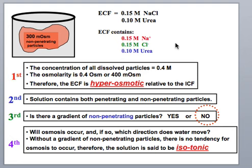In this case, we have a mixed type of solution. The extracellular fluid has 0.15 moles of sodium chloride and 0.1 moles of urea. We know that sodium chloride can dissociate in solution, so we're listing that as 0.15 moles of sodium and 0.15 moles of chloride. And then we also have our urea.